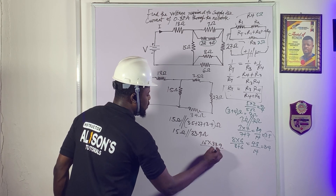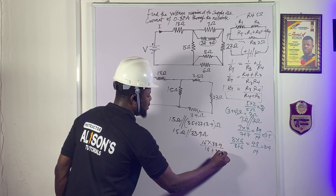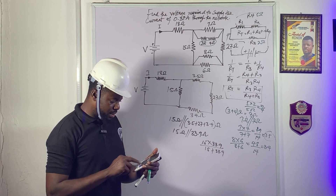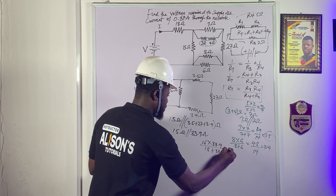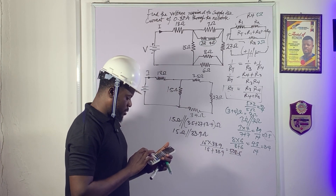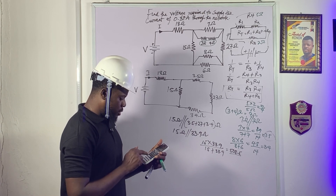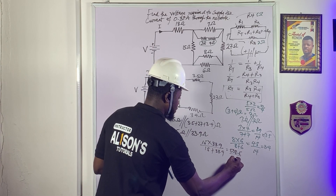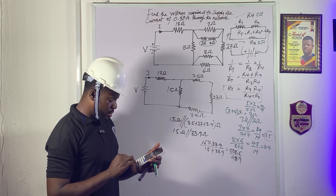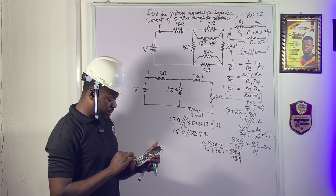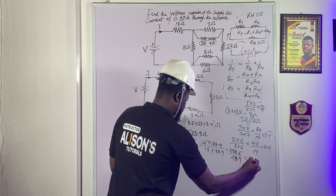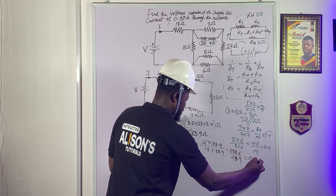To calculate the parallel combination of 15 ohms and 33.9 ohms: (15 × 33.9) / (15 + 33.9) = 508.5 / 48.9 ≈ 10.4 ohms. So the entire middle section of the circuit resolves to 10.4 ohms.